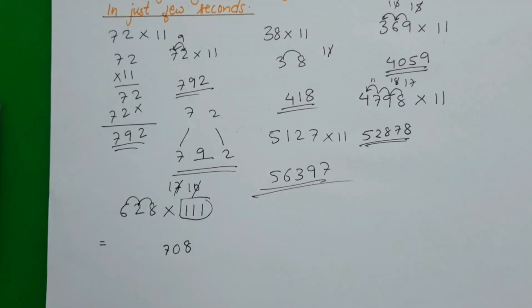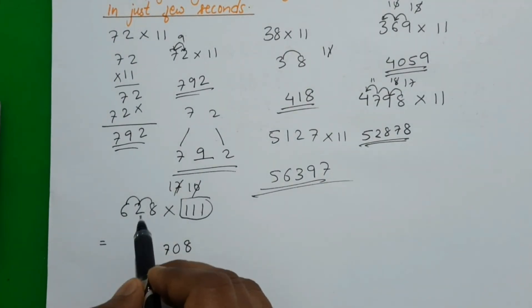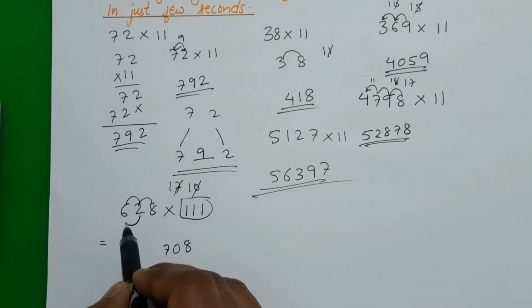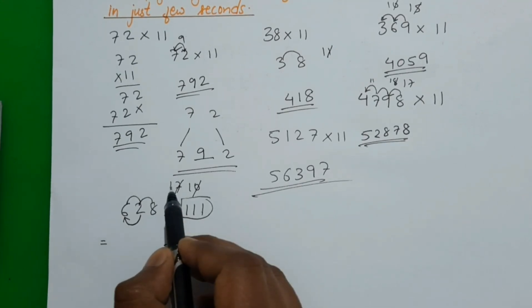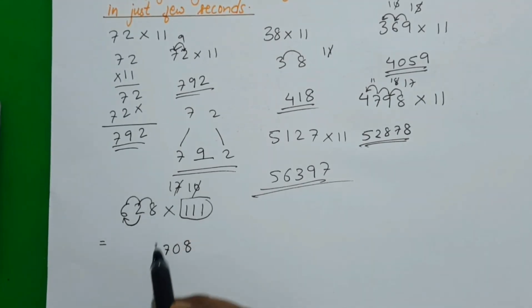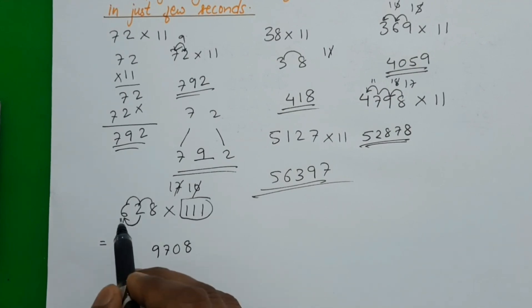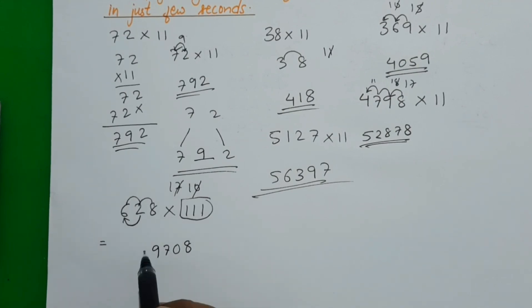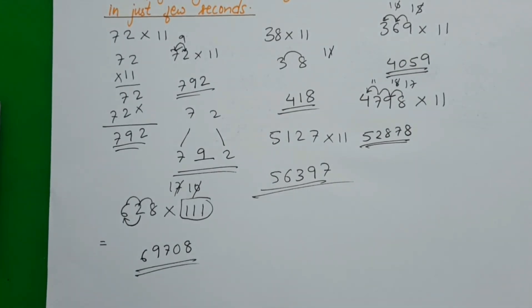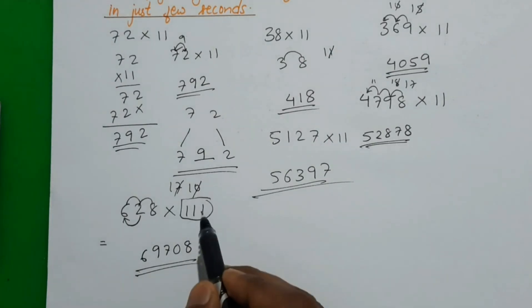In the next step we add 2 plus 6 is 8, plus the carried 1 gives 9. And finally we bring down 6. So our answer for 628 × 111 is 69708.